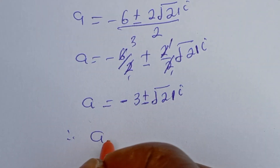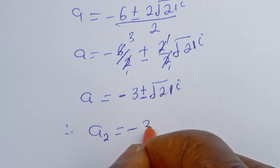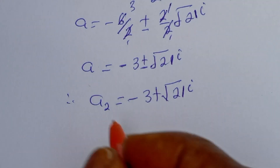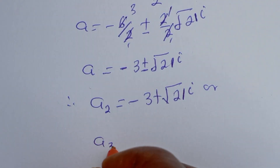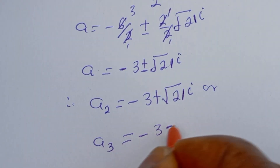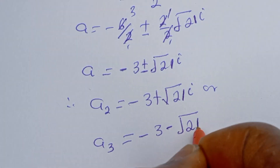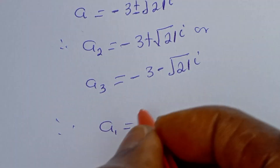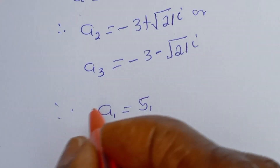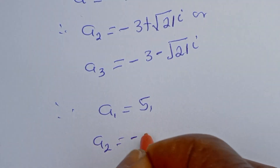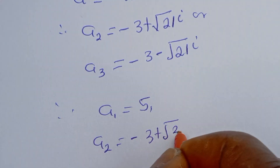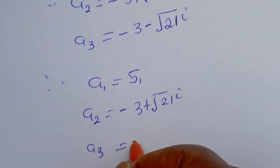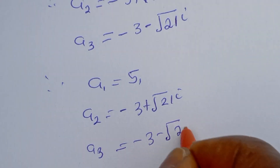Therefore, a₂ is equal to minus 3 plus square root of 21·i, or a₃ is equal to minus 3 minus square root of 21·i. And our final answers are: a₁ is equal to 5, a₂ is equal to minus 3 plus root 21·i, and a₃ is equal to minus 3 minus root 21·i.